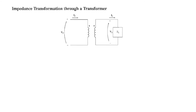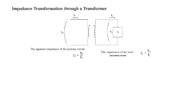Now we will see impedance transformation through a transformer. If we have a load impedance ZL on the secondary side, how can we represent its effect on the primary side? The load impedance ZL is given by V_S over I_S. And if we assume there is an apparent impedance ZL' on the primary side, ZL' is represented as primary voltage divided by primary current.